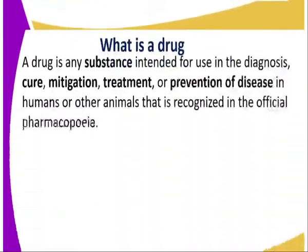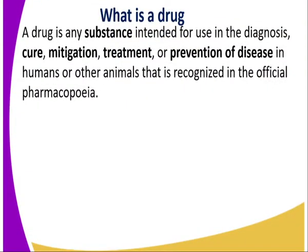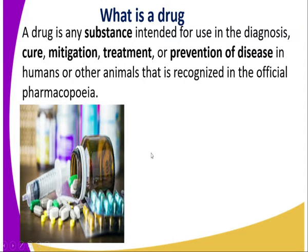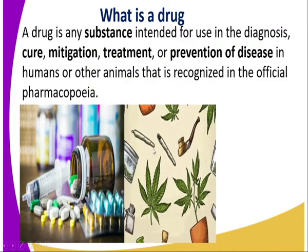We also mentioned what a drug is, and it's important for us now to adopt this definition. A drug is any substance intended for use in the diagnosis, cure, mitigation, treatment, or prevention of disease in humans or other animals that is recognized in the official pharmacopoeia. So it has to be recognized as a drug. Examples include tablets and capsules, administered in different ways. Others are natural, like khat and cannabis sativa, which are consumed in different ways. We also have beer, which can be manufactured, and those are some of the locally abused drugs.